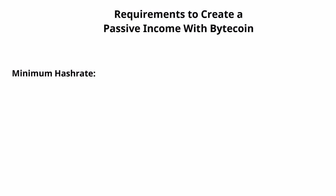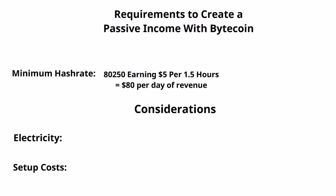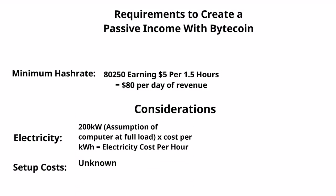To make this a passive income, you would require an average hash rate of at least 80,250 to earn $5 per hour and a half, equaling $80 per day of revenue. This would be almost worth the investment, but you need to include your electricity costs and setup costs, which would be too large for a small operation and deplete your revenue to less than $0 depending on your electricity costs of where you live.